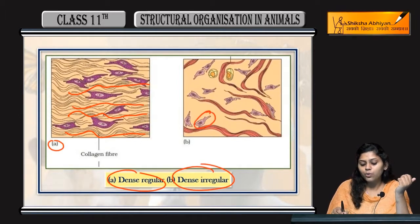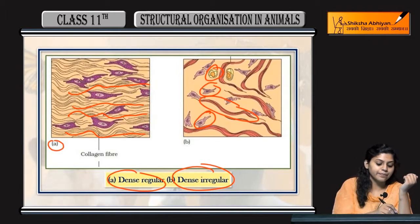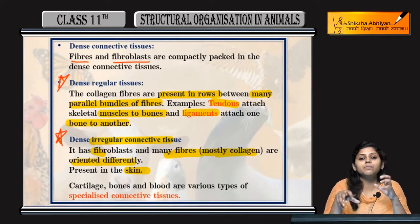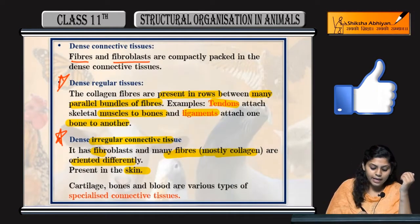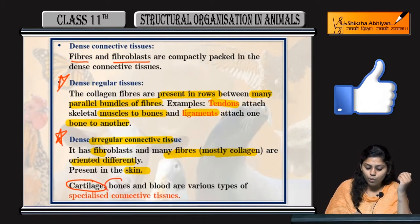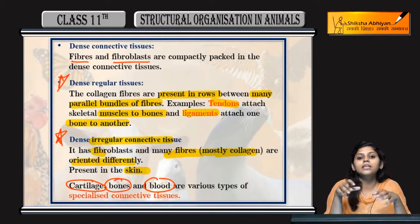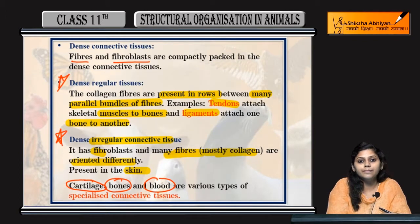Kisi bhi cell ki. Jo connective tissues specialized hain unmein korn-korn se aate hain - cartilage, bones, and blood. These are specialized connective tissues. We will study them in detail.